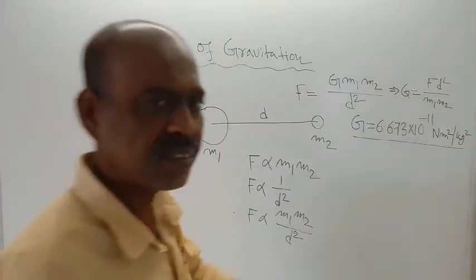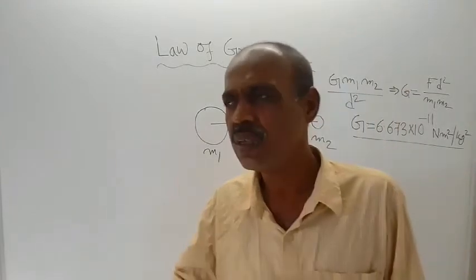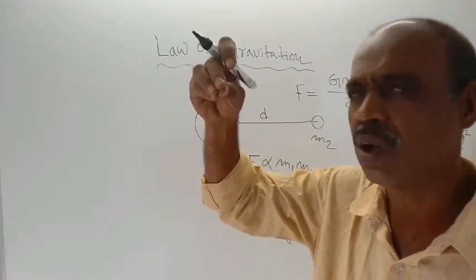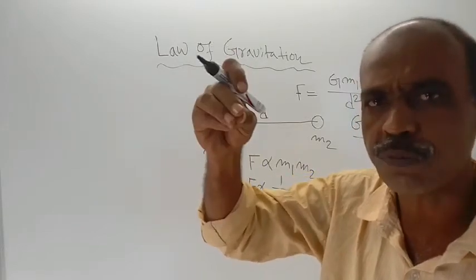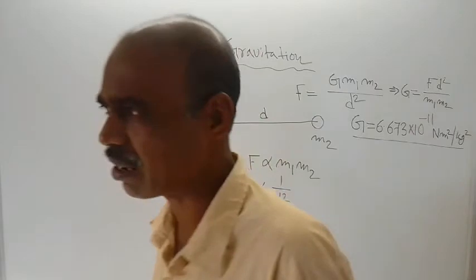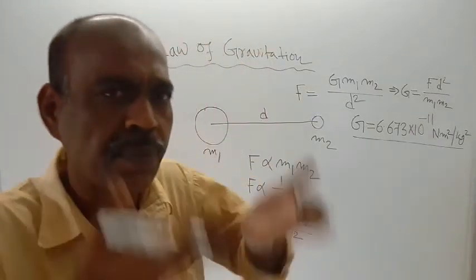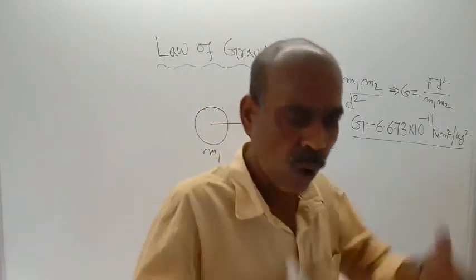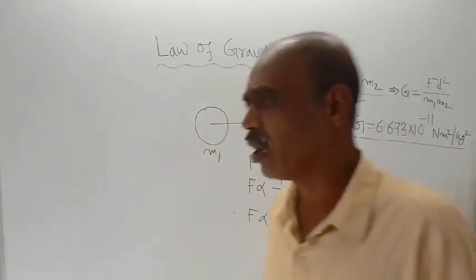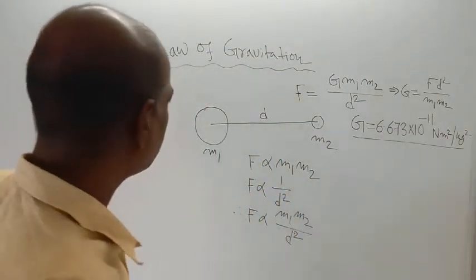Say an apple or any object — if you release that object, it will go directly to the surface of the Earth. This is known to us. So the question is: why is the Earth not coming towards that object? Why does the object go to the Earth?